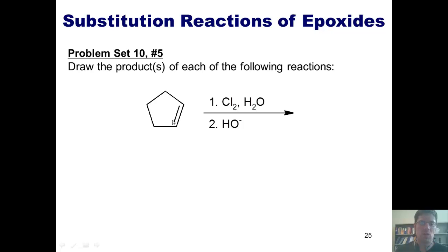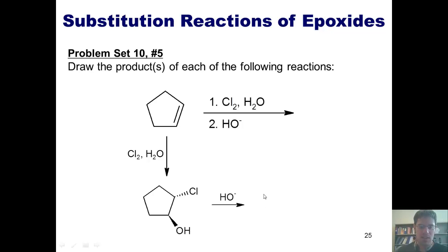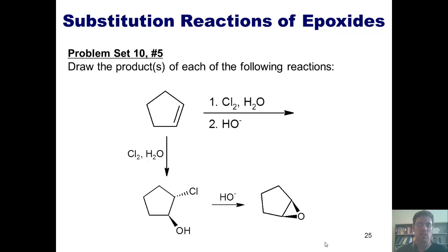Here's the answer. If I take this alkene and treat it with chlorine and H2O, it gives me a product in which the chlorine and the OH are trans to each other. I will also form the enantiomer of this product. If I treat this with base, the base will strip the proton off of this OH, giving me an O-. The O- will cyclize, form a bond with this carbon, and kick off a chloride in one fell swoop, SN2 style, to give me an epoxide.